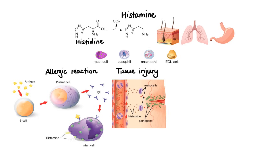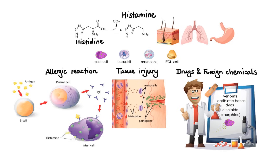Finally, the third major stimulus which triggers histamine release can come from drugs and foreign chemicals. Compounds found in venoms, antibiotic bases, dyes, and alkaloids such as morphine are a few examples that can directly displace histamine from the granule stores.